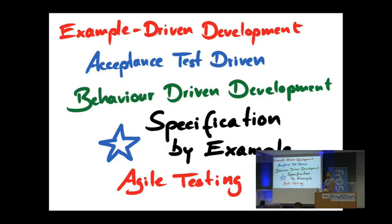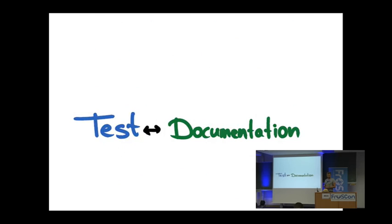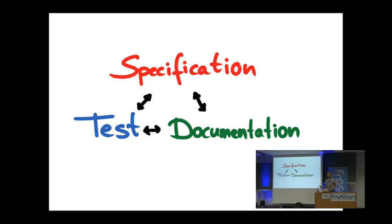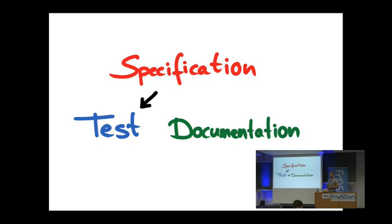I like 'specification by example' because it has the word 'specification' in it, which I think is what everything really comes down to. You have this interchangeability of tests and documentation — they're basically the same thing. Specification is the same thing as well; it just comes beforehand. You're describing the system before you build it. Documentation describes the system after you build it. Tests describe the system in order to validate the functionality. But it's just all descriptions of the system.